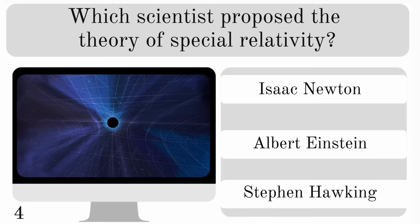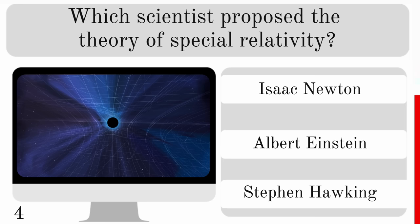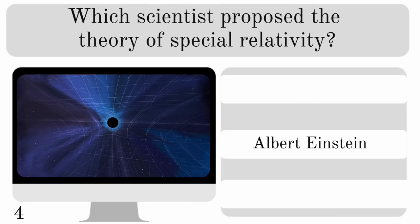Which scientist proposed the theory of special relativity? Was it Isaac Newton, Albert Einstein or Stephen Hawking? And that was Albert Einstein.